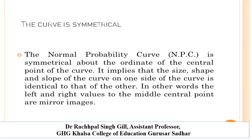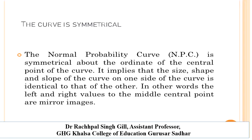The second property is that the curve is symmetrical. Symmetrical means the left and right values relative to the middle central point are mirror images of each other. The normal probability curve is symmetrical about the ordinate of the central point of the curve. This implies that the size, shape, and slope of the curve on one side is identical to the other side. As we observe, the left-hand side and right-hand side values are equal.